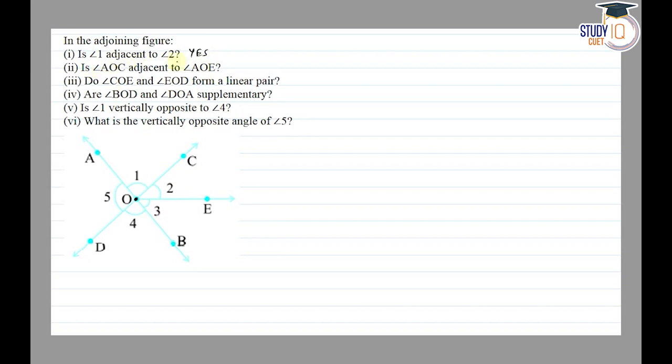Then second, is angle AOC adjacent to angle AOE? So AOC and AOE. We have a common vertex O and the common arm is AO. But non-common arms are OC and OE on one side of the common arm.